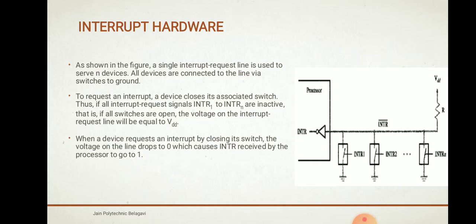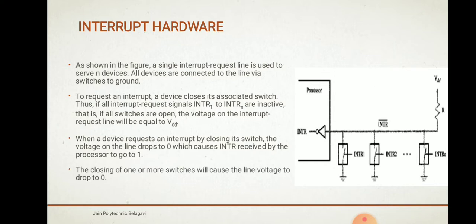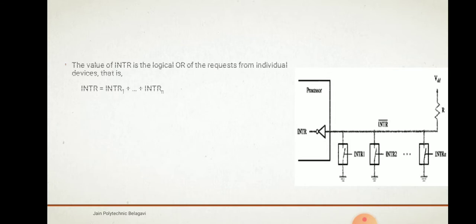When a device requests an interrupt by closing its switch — suppose INTR1 is the first interrupt — once INTR1 closes its switch, the voltage on that line drops to zero, which causes the INTR received by the processor to go to one. The closing of one or more switches will cause the line voltage to drop to zero. The value of INTR will be the logical OR of requests from individual devices: INTR1 + INTR2 + ... + INTRn.